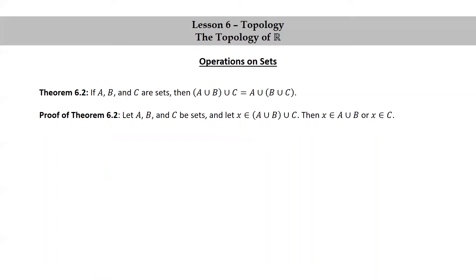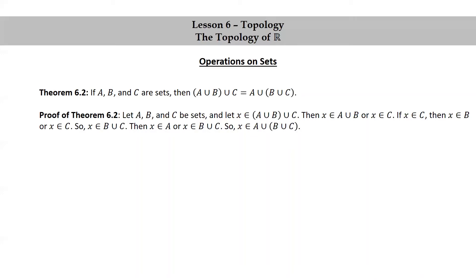First, let's assume that X is in C. Because if X is in C, then using the previous remark about the statement or, we could say that X is in B or X is in C. So by the definition of union, X is in B union C. Then again, using the previous remark about or, we could say X is in A or X is in B union C. And again, by the definition of union, X is in A union (B union C). So we did it for the case where X is in C.